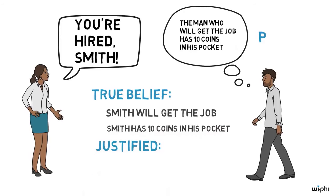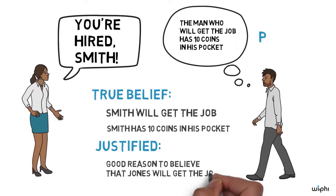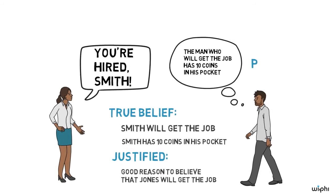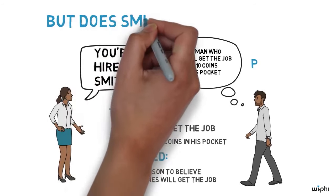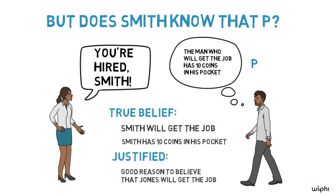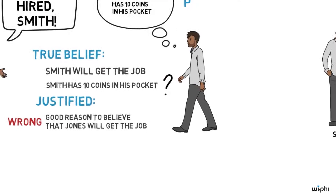It's also justified, because Smith has good reasons for thinking that Jones will get the job, and that Jones has 10 coins in his pocket. But does Smith actually know that the man who will get the job has 10 coins in his pocket? It seems not. Smith is wrong about who will get the job and doesn't know how many coins are in his own pocket.